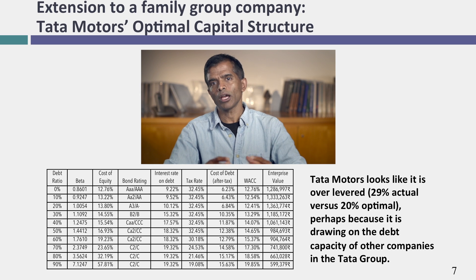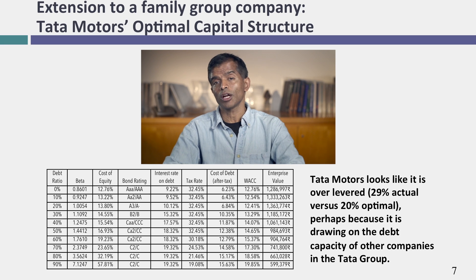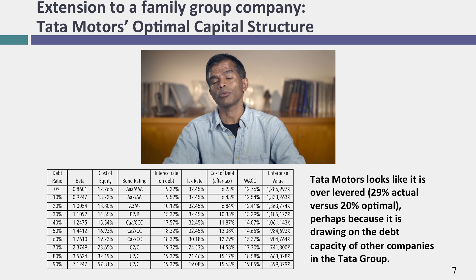For Tata Motors, I computed the levered beta, rating, cost of debt, and cost of capital at each debt ratio, exactly as I did for Disney. The optimal debt ratio for Tata Motors works out to about 20% debt and 80% equity. At their actual debt ratio of 29%, Tata Motors looks over-levered.